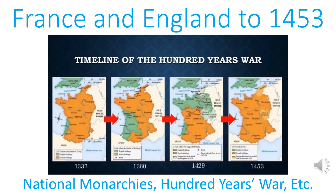In this video, I hope to accomplish three basic things. One is to give a brief overview of the history of France and England from the Norman Conquest in 1066 all the way until the end of the Hundred Years' War in 1453. The second and probably most important thing is to look at the concept and development of the national monarchy.